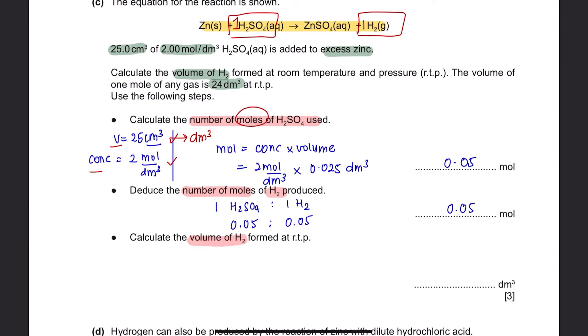Step 3, calculate the volume of hydrogen formed at room temperature. To convert mol into volume, you have to multiply with 24 dm³. So, the formula to calculate volume would be mol times 24 dm³. The mol of hydrogen is 0.05 multiplied by 24 dm³ will give you the value of 1.2 dm³.